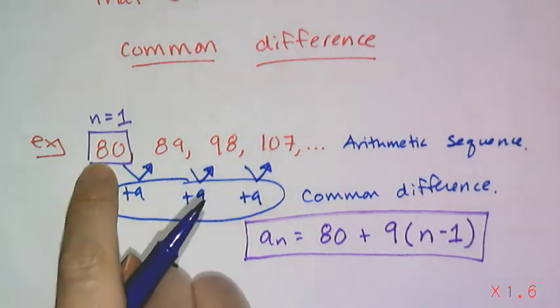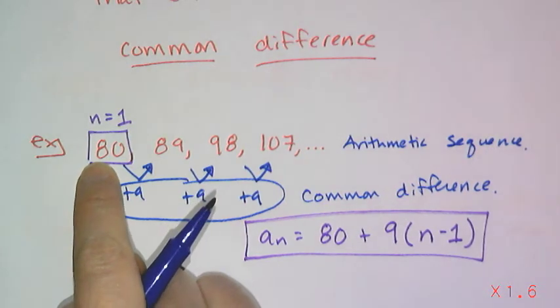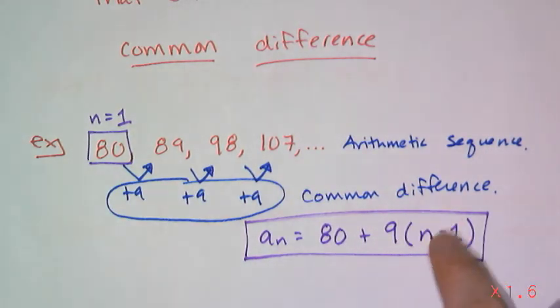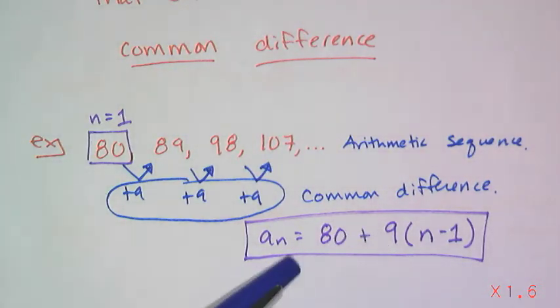Because if I think about it, that first term doesn't have the 9 added to it, so I don't want to include that 9. So I have to say n minus 1. And it turns out that every single arithmetic sequence has a general term that can be written in this form, that 80 was the first term, that 9 was the common difference.